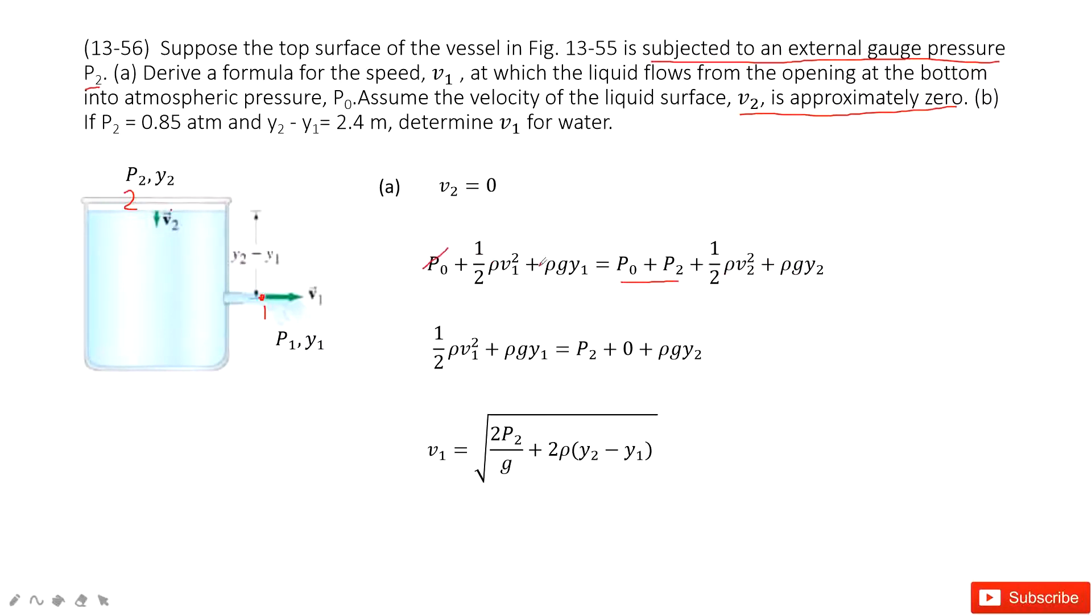Now we can see p0 and p0 cancel. And v2 is 0. Now looking at the remaining terms, we can solve this equation to get the formula for v1.